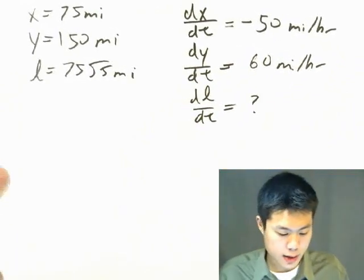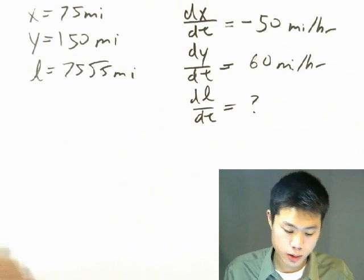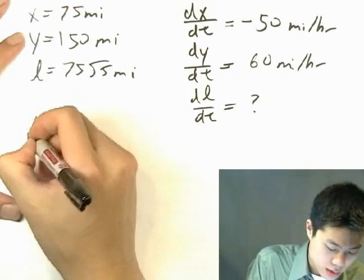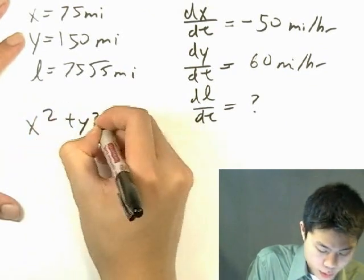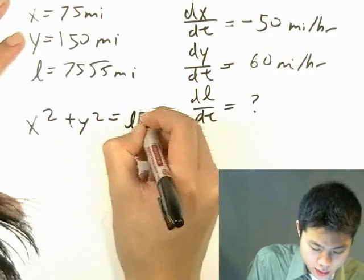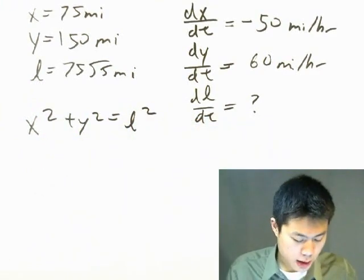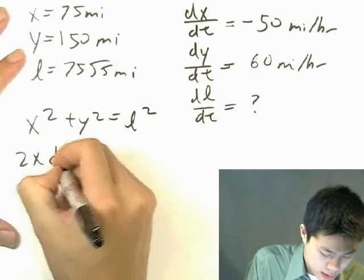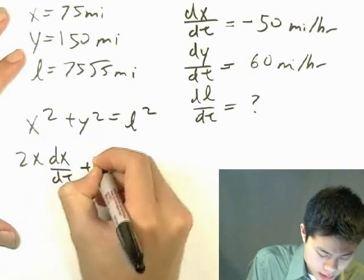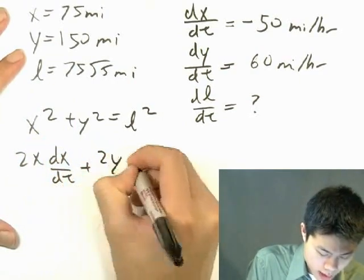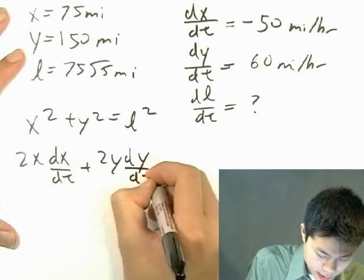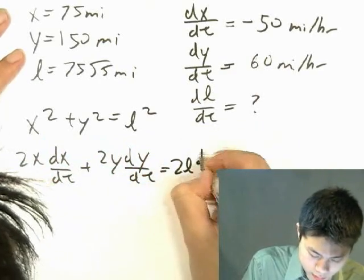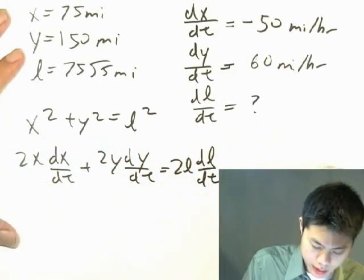Let's write the equation: X squared plus Y squared equals L squared. Now differentiate both sides with respect to t: 2X(dX/dt) plus 2Y(dY/dt) equals 2L(dL/dt).